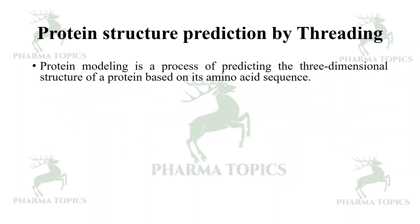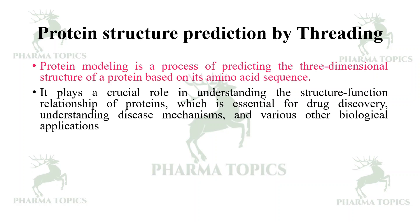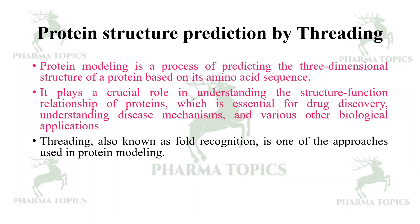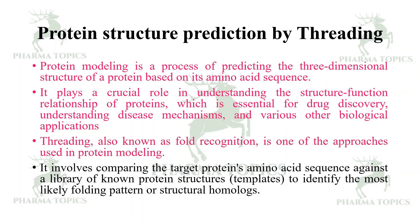Protein modeling is a process of predicting the three-dimensional structure of a protein based on its amino acid sequence. It plays a crucial role in understanding structure-function relationships of proteins, which is essential for drug discovery, understanding disease mechanisms, and various biological applications. Threading, also known as fold recognition, involves comparing the target protein's amino acid sequence against a library of known protein structures to identify the most likely folding pattern or structural homologues.